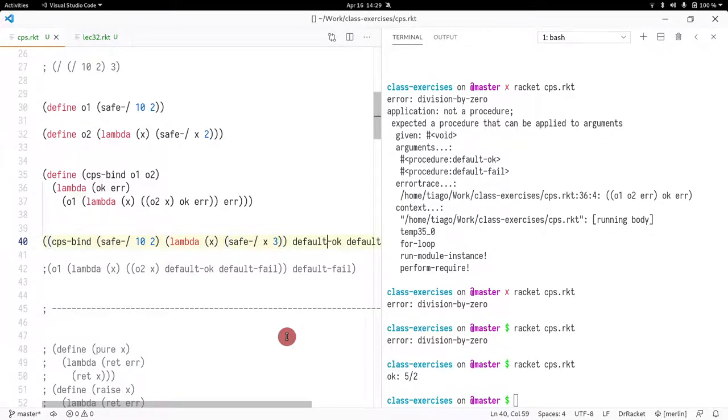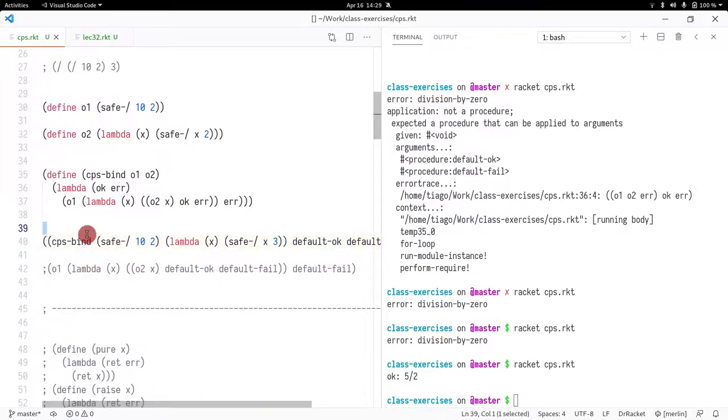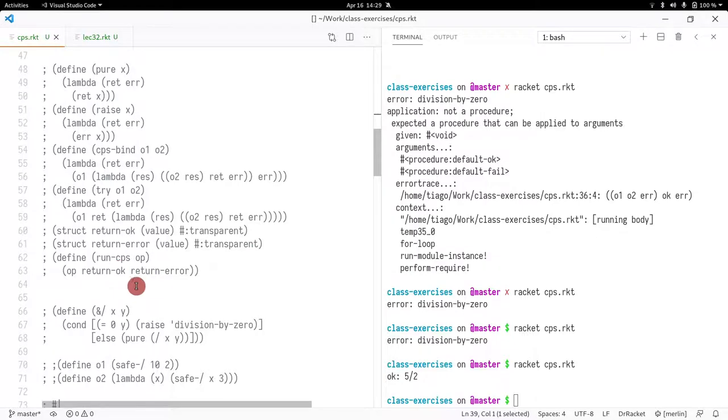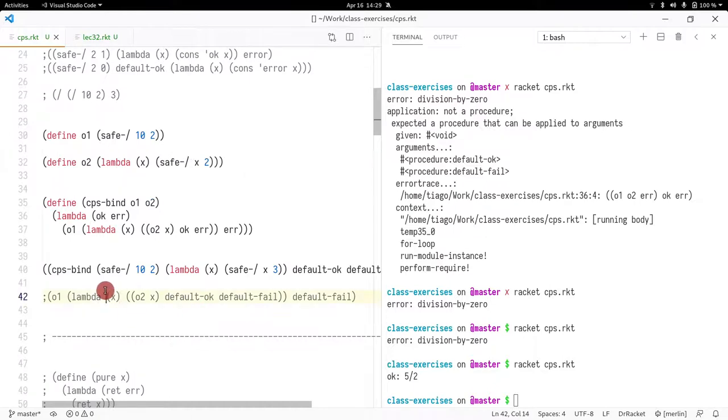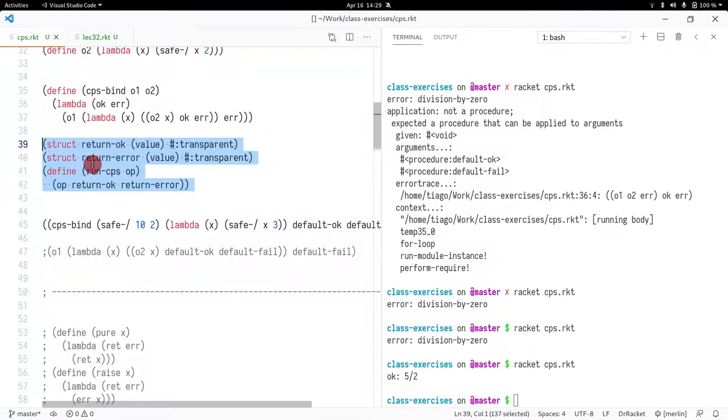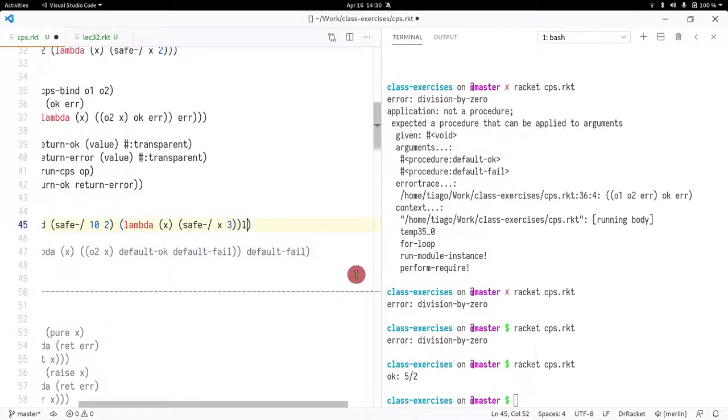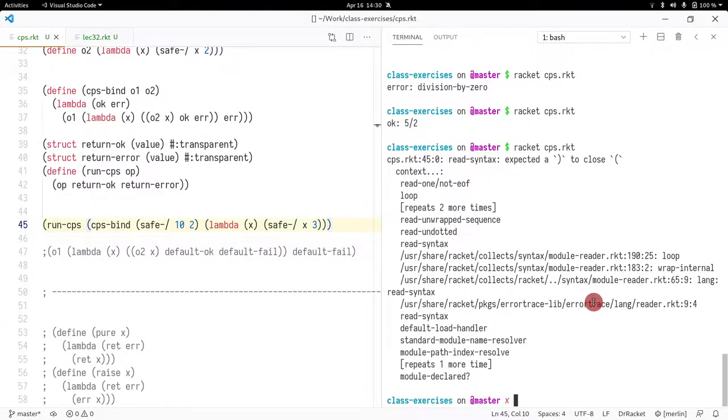Actually, let me do three. And instead of having this thing where I always pass default OK, I'm just going to define CPS run. Do I have CPS run somewhere? I have run CPS here, yeah. So I actually had created a function or a struct for return OK and one for return error, just so it shows a bit nicer. Then I have this run CPS that simply provides the defaults.